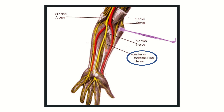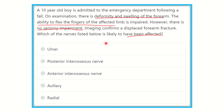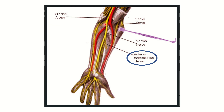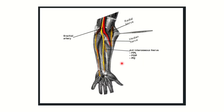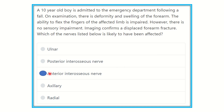All three nerves — median, anterior interosseous, and ulnar — could be affected, but the key point is that the ability to flex the fingers is affected. Flexion of the fingers is maintained by flexor pollicis longus and flexor digitorum profundus, which are supplied by the anterior interosseous nerve. So our final answer is the anterior interosseous nerve. Another important point: there is no sensory impairment.